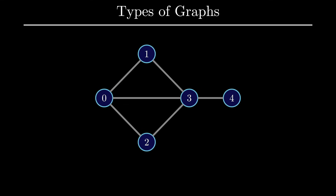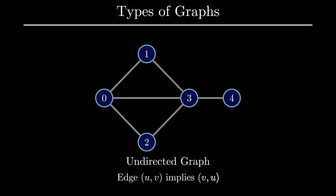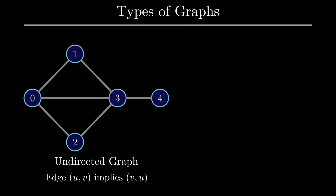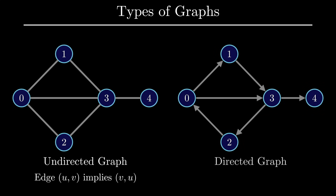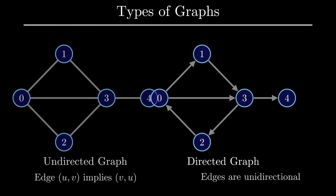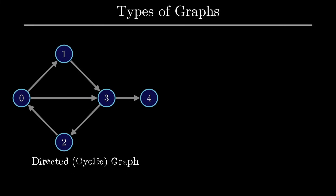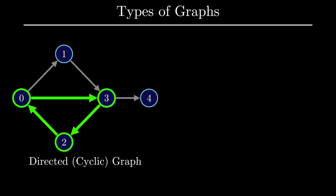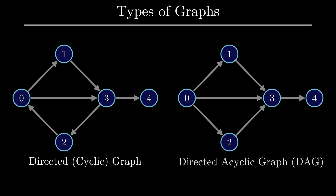Let's now transition to the types of graphs that you may encounter. The main graph we've seen so far is specifically called an undirected graph, where if I have an edge connecting vertex 0 to vertex 1, it's implied that I also have an edge from vertex 1 to vertex 0. A graph where this would not be the case is called a directed graph, where now edges are unidirectional. Directed graphs also have their own classes. A directed graph with a cycle can be referred to as a directed cyclic graph, and if a graph is directed and contains no cycles, we refer to that specifically as a directed acyclic graph, which has been studied quite rigorously since it shows up in all sorts of interesting problems.